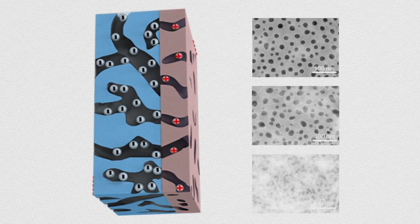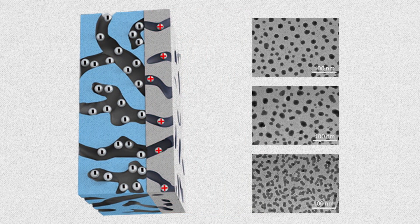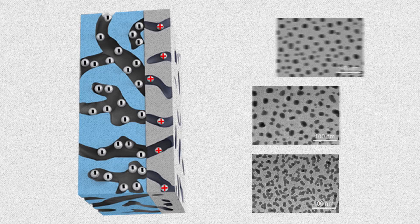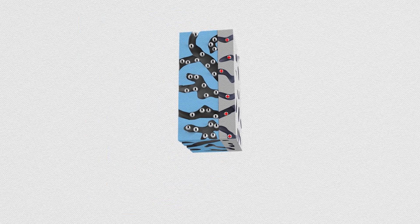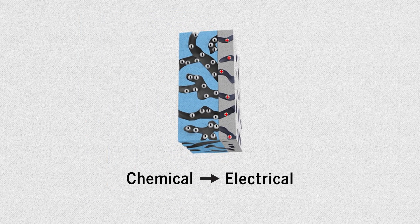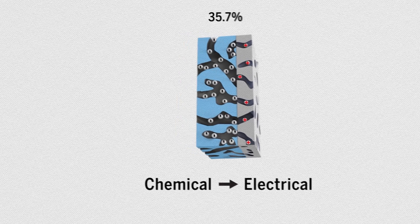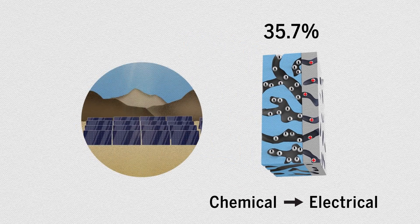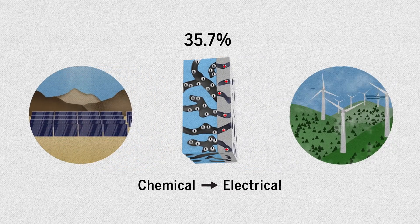The membrane can be tuned to have different sized pores and accept different kinds of charged particles. The researchers measured how efficient this process was at converting chemical energy to electrical energy. At about 35.7%, it's better than a solar cell, but not as good as a wind turbine.